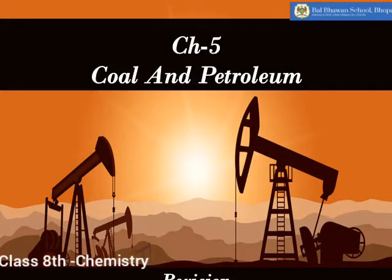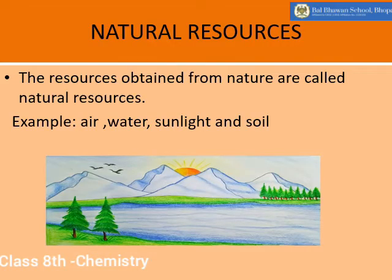Good morning dear students, hope you all are fine. Today we'll be doing the revision of chapter number 5, Coal and Petroleum, which is part of your P1 exam. First of all, let us discuss about what are natural resources, and then we will discuss about coal and petroleum. Resources are classified into two major groups: natural resources and man-made resources. The resources which we obtain from nature are called natural resources — for example, air, water, sunlight, etc.